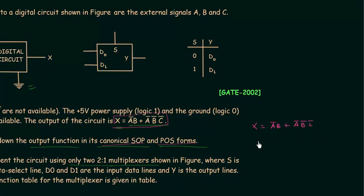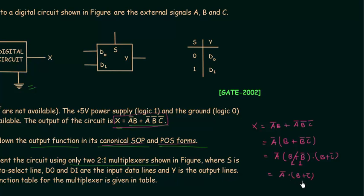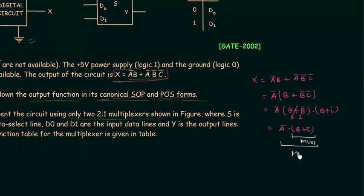The function is X = A'B + A'B'C'. A complement is common in both product terms, so I take A' out as a common factor. Inside the bracket we have B + B'C'. Applying the distributive law: B + B'C' = (B + B')(B + C') = 1·(B + C') = B + C'. Therefore X = A'(B + C'). I will use the first multiplexer to implement B + C' and the second to implement A'(B + C').